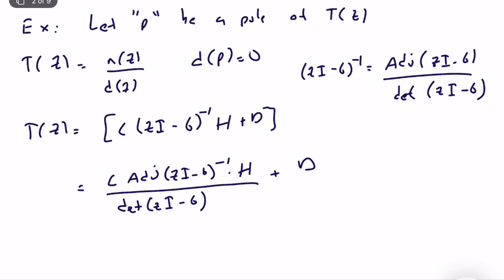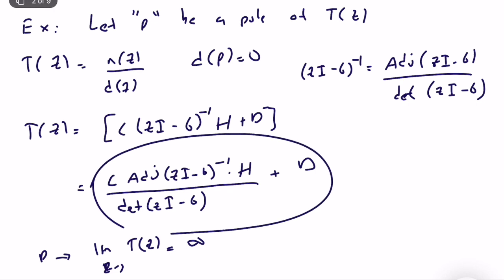For a single-input single-output system, the numerator is a polynomial in z. Since p is a pole, the limit of T(z) as z → p is infinity, which means the transfer function blows up. This can only happen when det(zI - G) = 0, so det(pI - G) = 0.